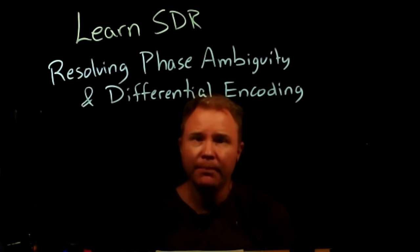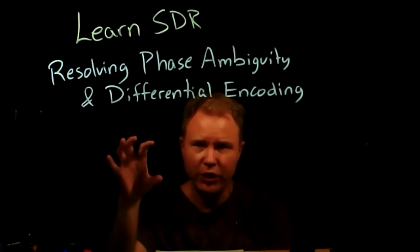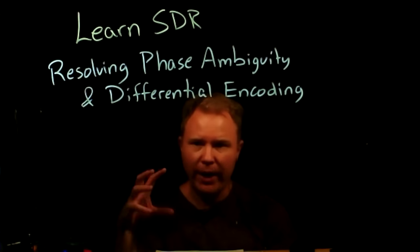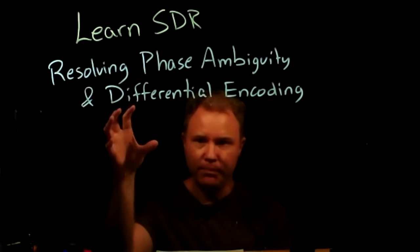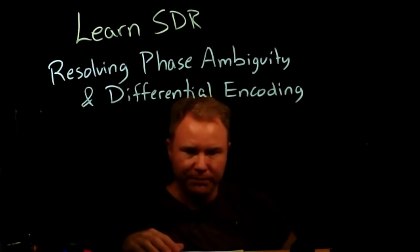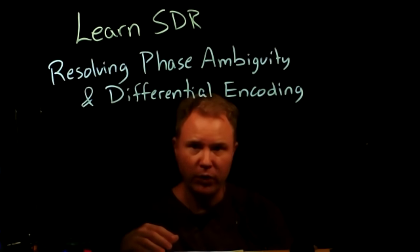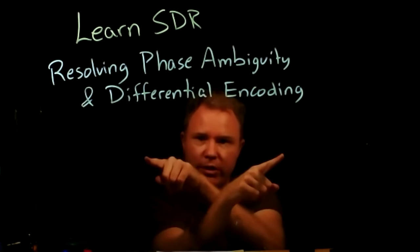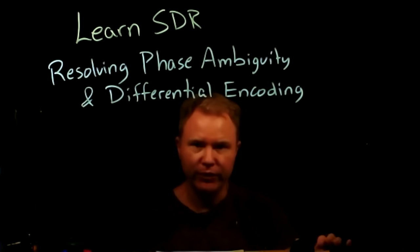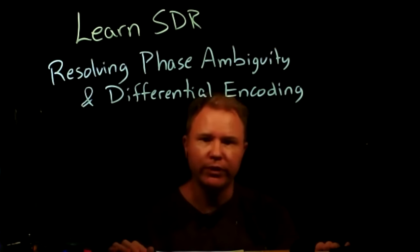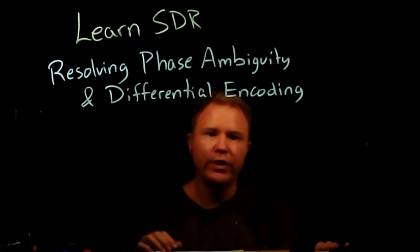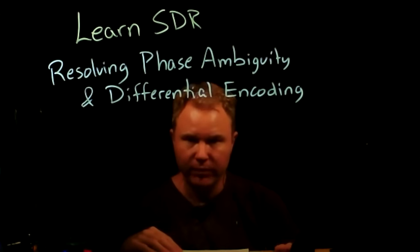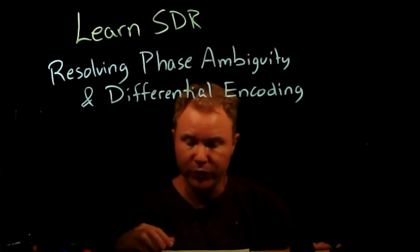Welcome back to LearnSDR with Prof. Jason. Last time we talked about how to lock a constellation onto the right points, but it ends up locking onto an arbitrary point — whatever happens to end up finally locking. For binary phase shift keying where we're sending plus ones and minus ones, we might end up getting them out in the right order or inverted. For QPSK with four different points, it might lock onto any of those four 90-degree rotations, not necessarily the one you need.